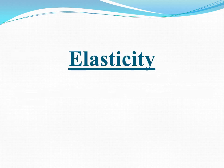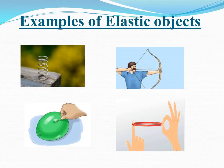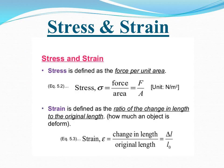Now let's move to elasticity. Elasticity is the ability of an object or material to resume its normal shape after being stretched or compressed. For example, if you stretch a rubber band and remove the force, it comes back to its original shape — so it is an elastic object. Examples of elastic objects include springs, a stretched bow, a balloon, and a rubber band.